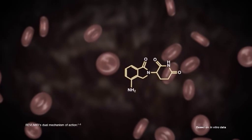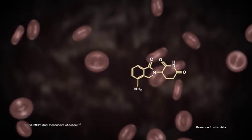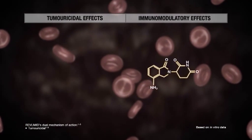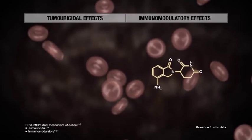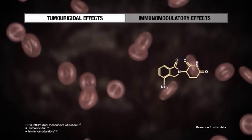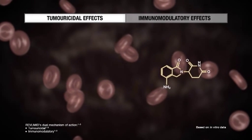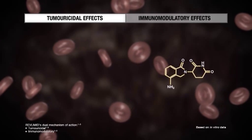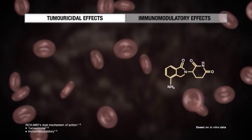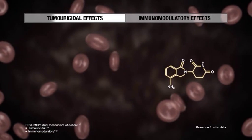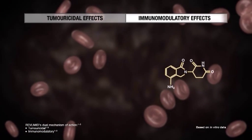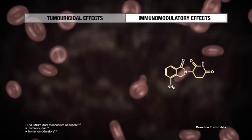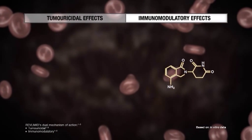Revlimid has a dual mechanism of action: an anti-tumor effect and an immunomodulatory effect. The anti-tumor effect inhibits the growth and proliferation of tumour cells and leads to the death of myeloma cells. The immunomodulatory effect enhances the immune system's response against myeloma cells.